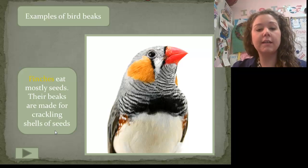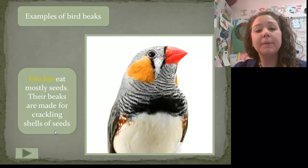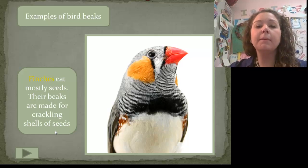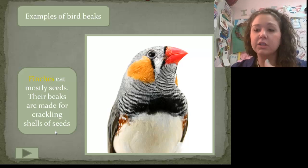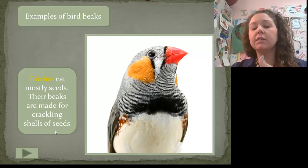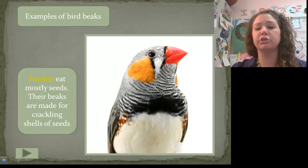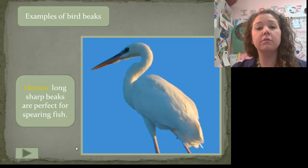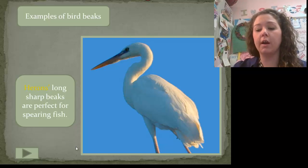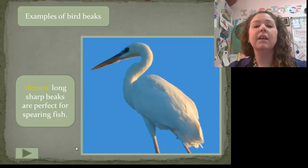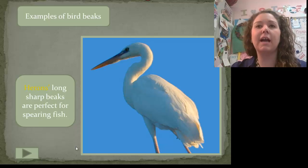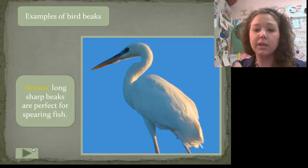Here's a finch — look at its beak shape. Finches mostly eat seeds, and their beaks are made to crack the shells of seeds. That's an adaptation: the way that beak is structured helps it get the food it needs to survive. So write down beaks — you should have feathers written down already. Here's a heron with a really long, pointy beak that lets it spear fish — it can poke it into the water and pinch a fish.